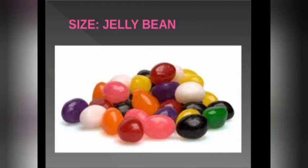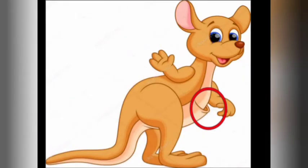He or she is born first. So we are talking about joeys. The size of a joey is similar to this jelly bean — can you see these jelly beans on your screen? The size of a kangaroo's baby, that is a joey, is the size of a jelly bean.